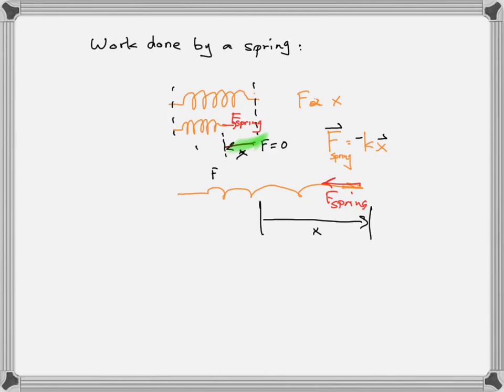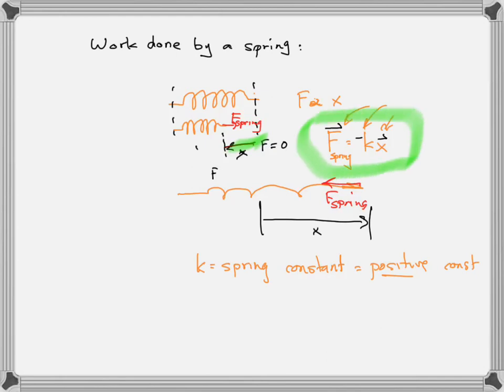K is a positive constant — super important. K is called the spring constant. It is just the proportionality constant. It's always positive because the minus sign takes into account the vector nature of F and x. K is just a constant; the minus sign sits there. This law, by the way, is actually called Hooke's law.